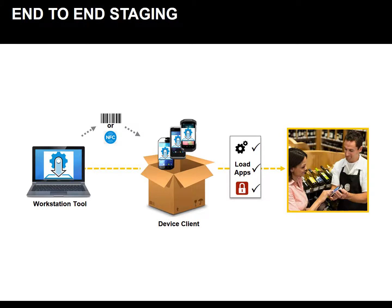This is an end-to-end diagram of what staging really is, with a view of where StageNow fits in. The workstation tool creates profiles and outputs them into barcodes or NFC tags. Devices with the StageNow client out of the box can then scan these barcodes and NFC tags in order to load settings, applications, security features, and much more — and create a perfect golden scenario for your devices.